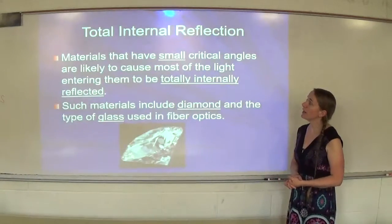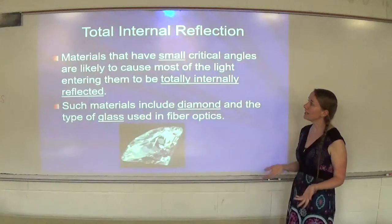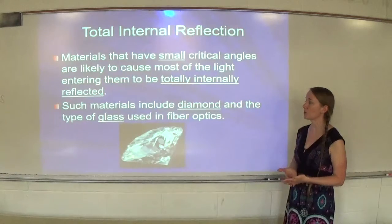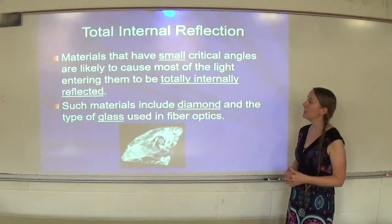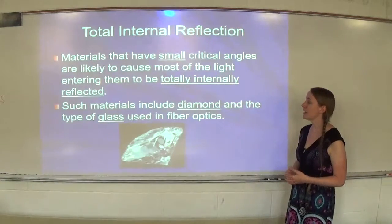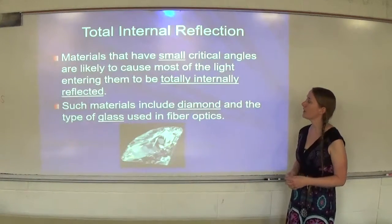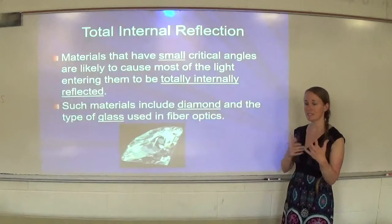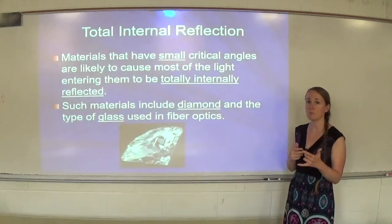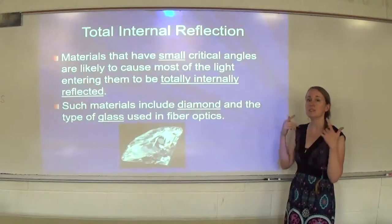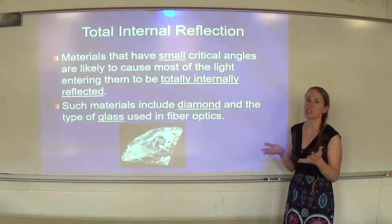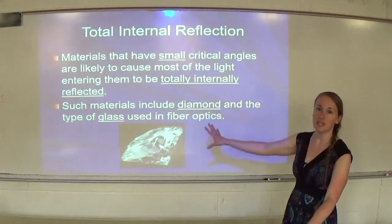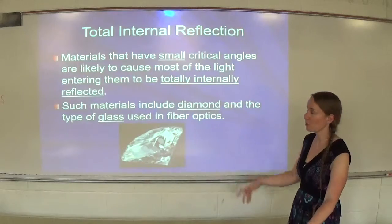Materials with small critical angles are likely to cause most of the light entering them to be totally internally reflected. Such materials include diamond and the type of glass used in fiber optics. In a diamond, we want to keep light bouncing around inside as much as possible, because that gives it the sparkle and shine we want — which is why diamonds are cut in a particular way.